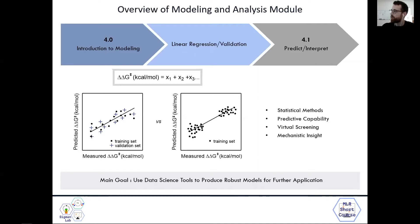And then in a separate video, Module 4.1, I'll discuss how we use optimal models to predict new reaction components, as well as to start to interpret different parameters in the models to gain that mechanistic insight we're interested in. Really, the overall goal of this module is to use the data science tools available to us to produce robust models for further applications we're interested in.